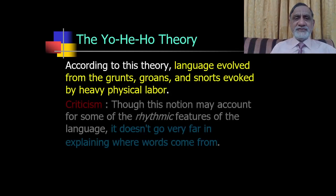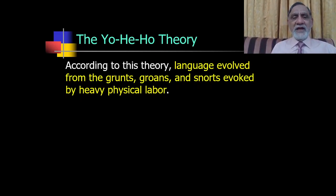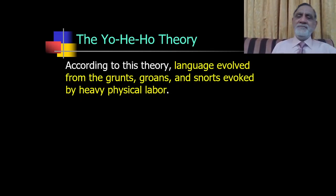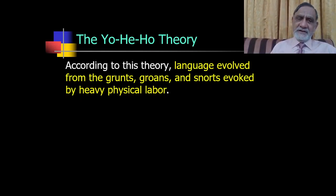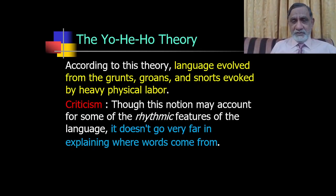The last theory we discuss here is the yo-hee-ho theory. According to this theory, language evolved from grunts, groans, and snores brought on by heavy physical labor. When we do something difficult or strenuous, certain sounds are produced — grunts, groans, and snores — and this theory says language developed from that. Obviously, though this notion may account for some rhythmic features of language, it does not go very far in explaining where words actually come from.